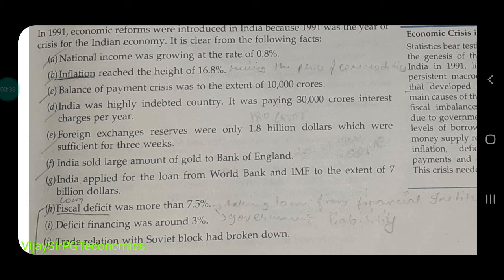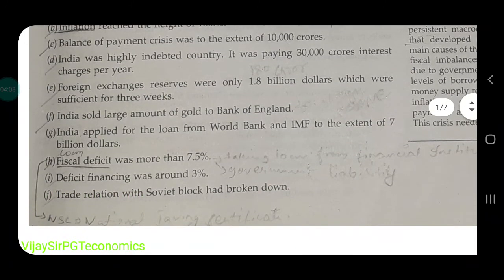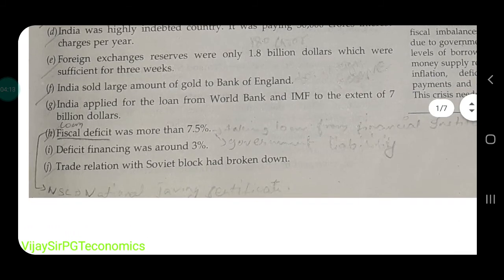The balance of payment crisis means we were exporting less and importing more — we were importing a lot and exporting very little. India was also a highly indebted country, paying 30,000 crore rupees per year in interest charges alone — not the principal amount, only the interest. Foreign exchange reserves were only 1.8 billion dollars, sufficient for just three weeks.